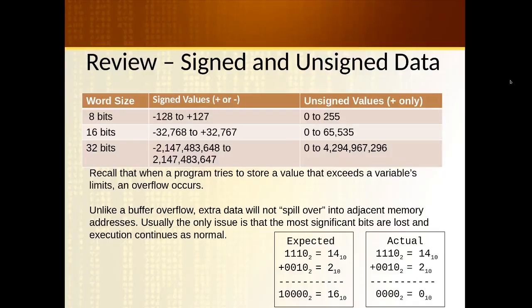Based on the way we store numbers in computers, we'll select a number of bits to store that data type. Whether it's signed or unsigned, that number of bits can only store so many values. For example, if we had eight bits, we could store either values negative 128 to positive 127, or zero to 255.